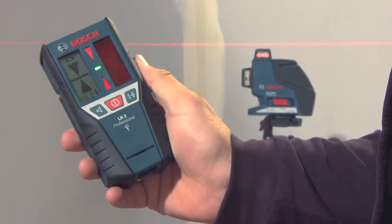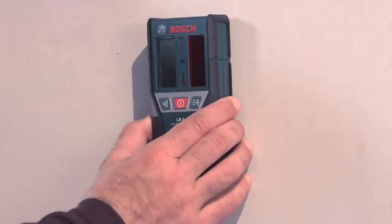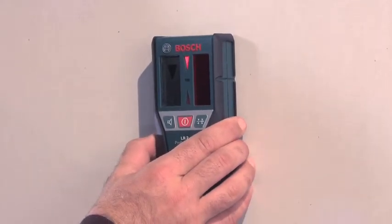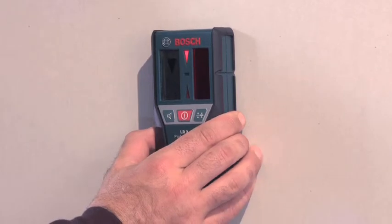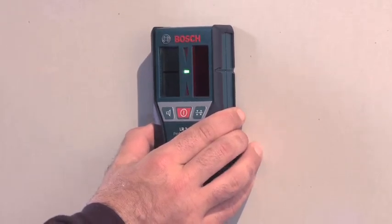With the help of the receiver, the GLL 380P Professional has a range of up to 80 meters diameter. The receiver uses light-emitting diodes and acoustic signals to indicate when the laser beam is perfectly aligned.